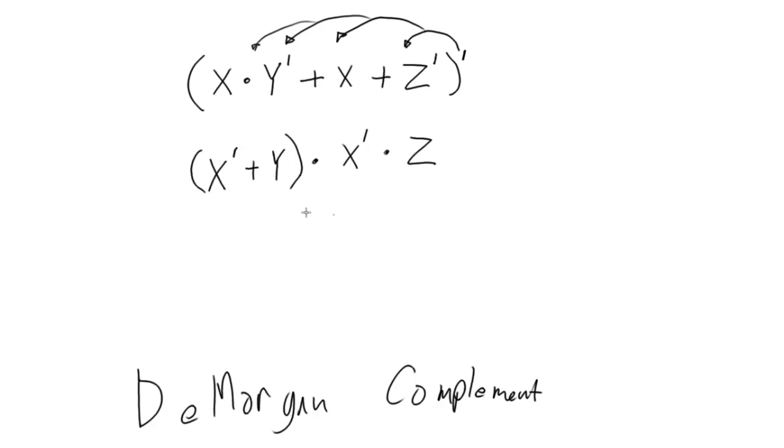Because let's imagine real quick what would happen if we didn't do that. If we didn't do that we would have Y anded with X not. And then we would or it with X not. And then and it with Z.